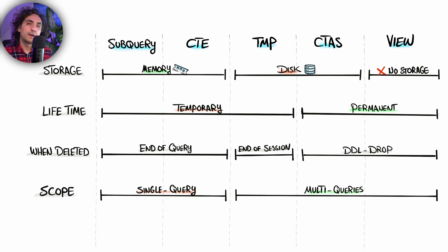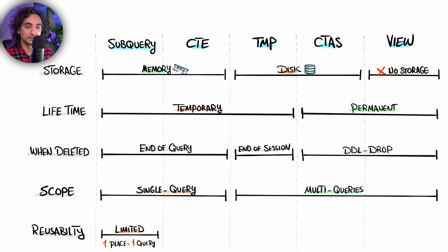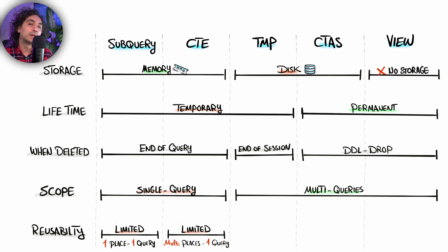Thinking about reusability: subqueries are the worst — they can only be used in one query and in one place, so if you need the same logic in multiple places you have to repeat it. CTEs are a little bit better — you can still access them only within one single query, but you can reference the CTE multiple times from different joins within that same query, so you don't have to repeat the same logic over and over.